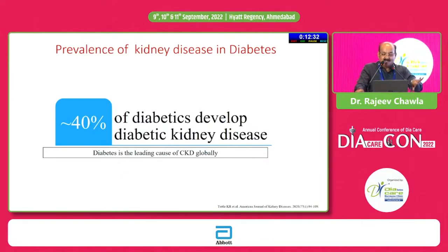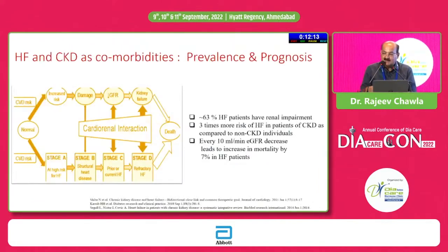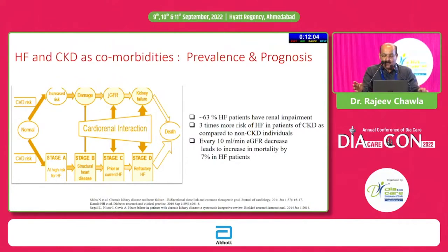40% of diabetic patients develop diabetic kidney disease. In the US, at least 50% of patients ending up on hemodialysis have type 2 diabetes. So type 2 diabetes very frequently leads to CKD or diabetic kidney disease. Heart failure and CKD are very common comorbidities with a bidirectional, very dynamic link to each other.